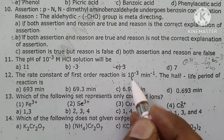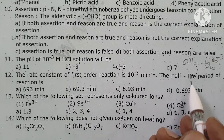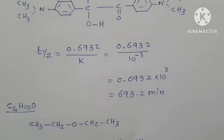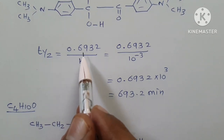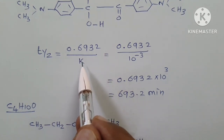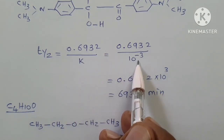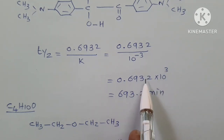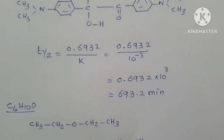The rate of a first-order reaction is 10⁻³ min⁻¹. The half-life period formula is t½ = 0.693/K. With K = 10⁻³, t½ = 0.693/10⁻³ = 693 minutes.